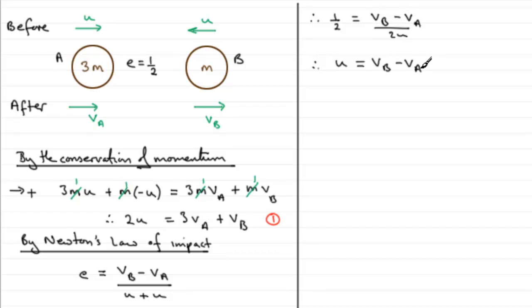We've now got another equation where we could make VB or VA the subject. I'm going to make VB the subject, so VB will equal u plus VA if we add VA to both sides. We'll call this equation 2, and all I need to do now is substitute equation 2 into equation 1.